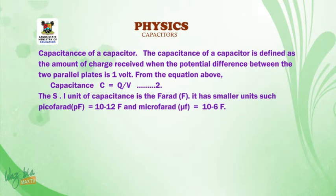Capacitance of a capacitor. The capacitance of a capacitor is defined as the amount of charge received when the potential difference between the two parallel plates is 1 volt. From the above equation, capacitance is equal to Q over V. The SI unit of capacitance is farad. It has smaller units such as picofarad, which is 10 raised to negative 12 farad, and microfarad, which is 10 raised to negative 6 farad.